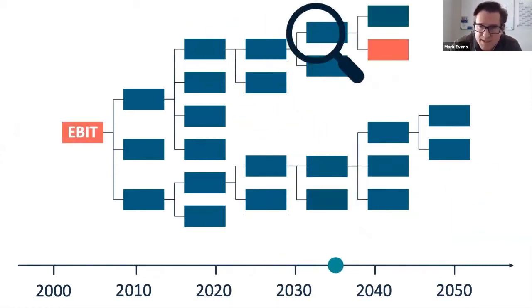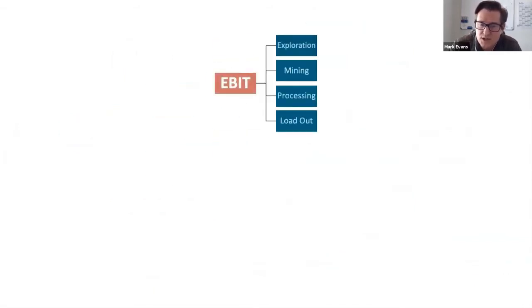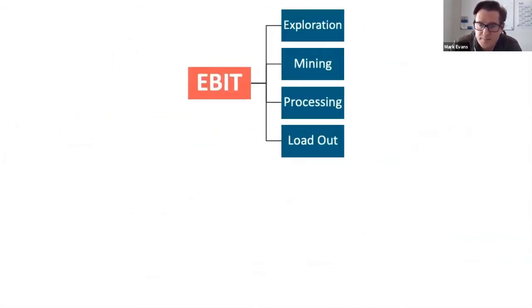Once I know what drives value then I can go out and start looking at number one: what technologies are available, and number two: what technologies are suitable for me and my operation.